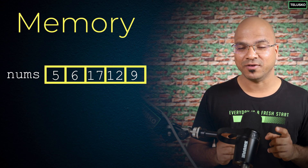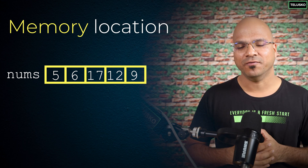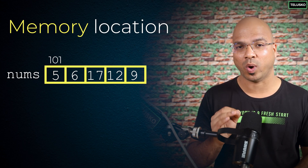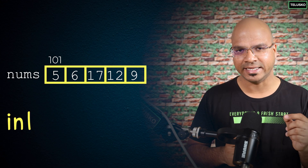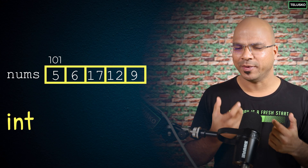This data will be stored in memory, and every memory location has an address. Let's say we are storing this data at location 101. Every time you store a normal variable — a primitive type like int — each type has a different size depending on the language, let's say two bytes. So if you create a variable int a = 5, it will take two bytes in memory and have an address. When you ask for the value of a, the program jumps to that memory address to get the value.